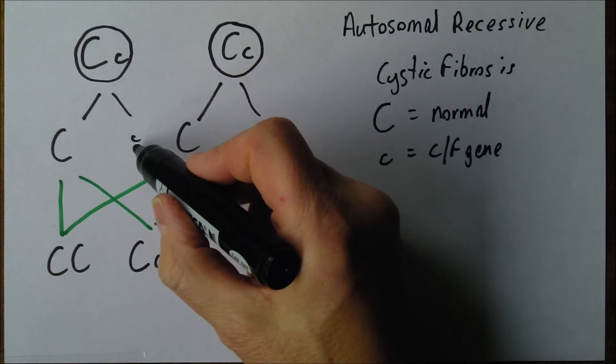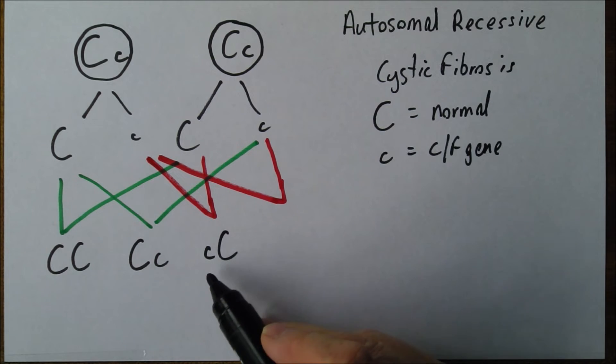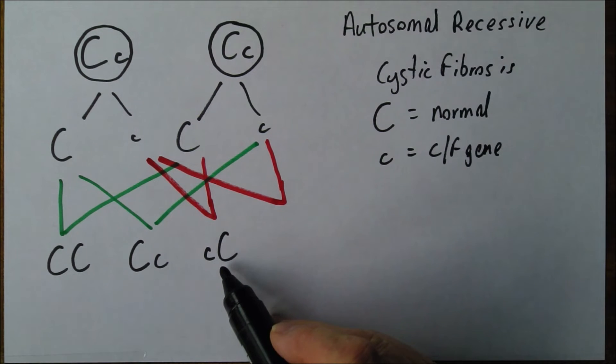In this situation, we have small c and big C - that's the same. A child who is potentially a carrier but phenotypically normal and will not suffer from the condition.